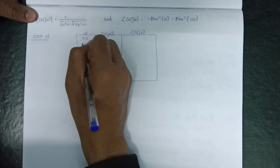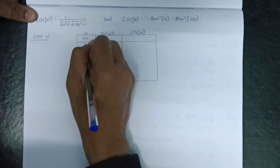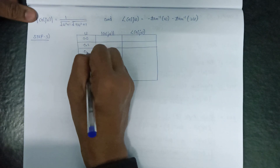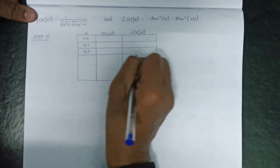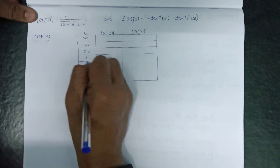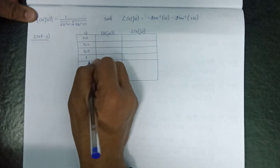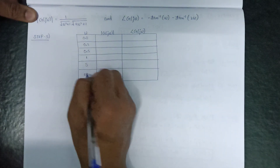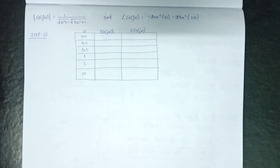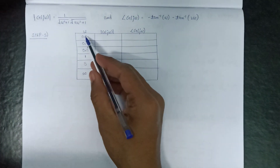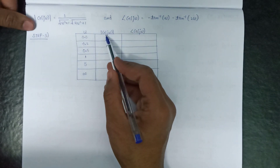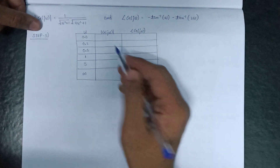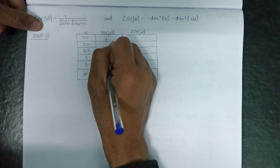The values of ω used in the table are: ω = 0, ω = 0.5, ω = 1, ω = 5, and ω = ∞. For all these values of ω we calculate the corresponding values of magnitude and phase angle.